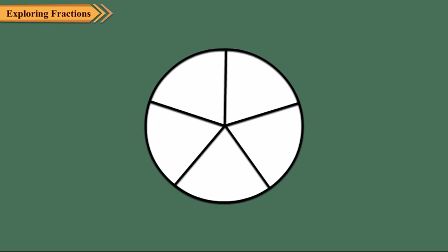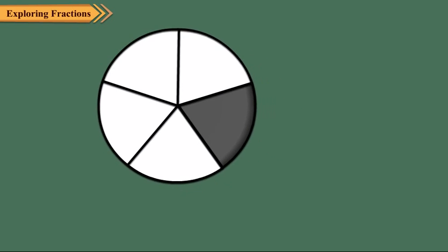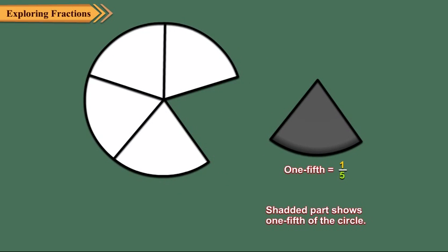Here, the circle has been divided into five equal parts and one part is shaded. The shaded part represents one-fifth of the circle. We write it as one upon five.